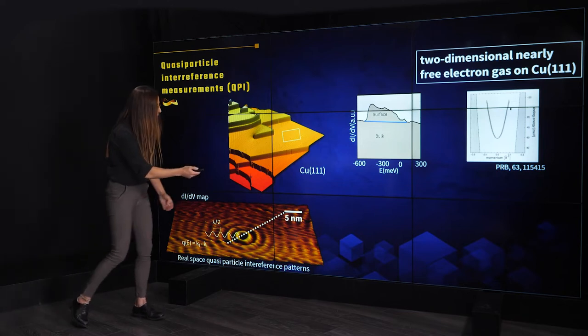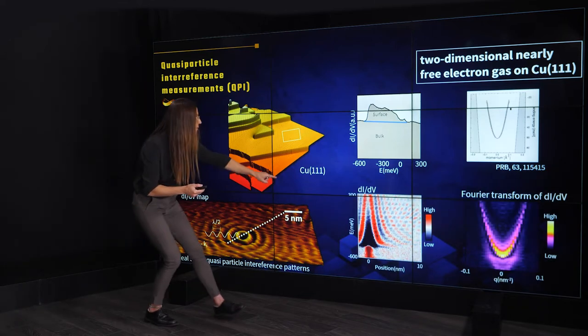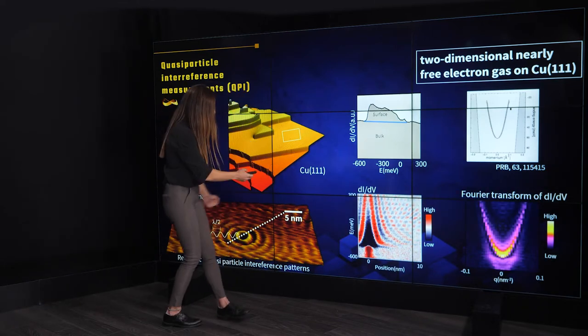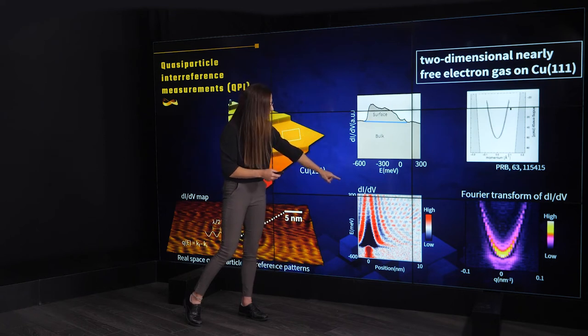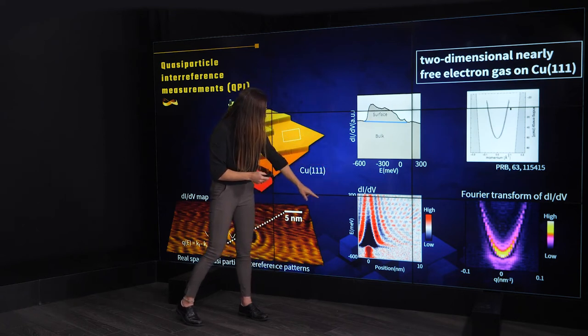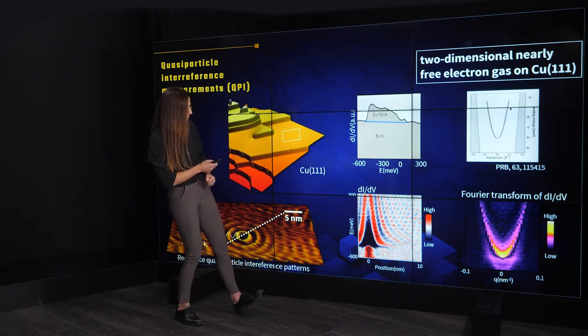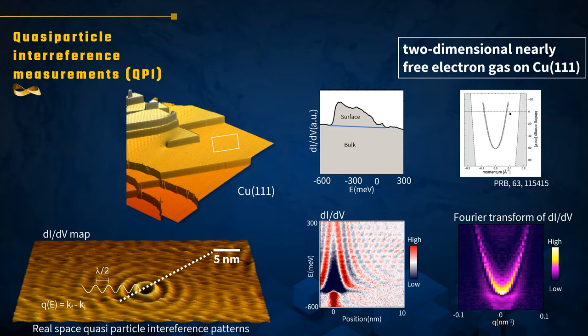Here we have a line cut across this modulation and we look at how the density of states changes as a function of energy along this line cut. At high energy the modulations are more frequent; at low energy we have lower-frequency modulations. When we take a Fourier transform we see immediately the parabolic dispersion representing the nearly free electron gas on the surface. We just need to remember that in momentum-transfer space the distance is twice the distance in momentum space, since scattering can occur in both directions.